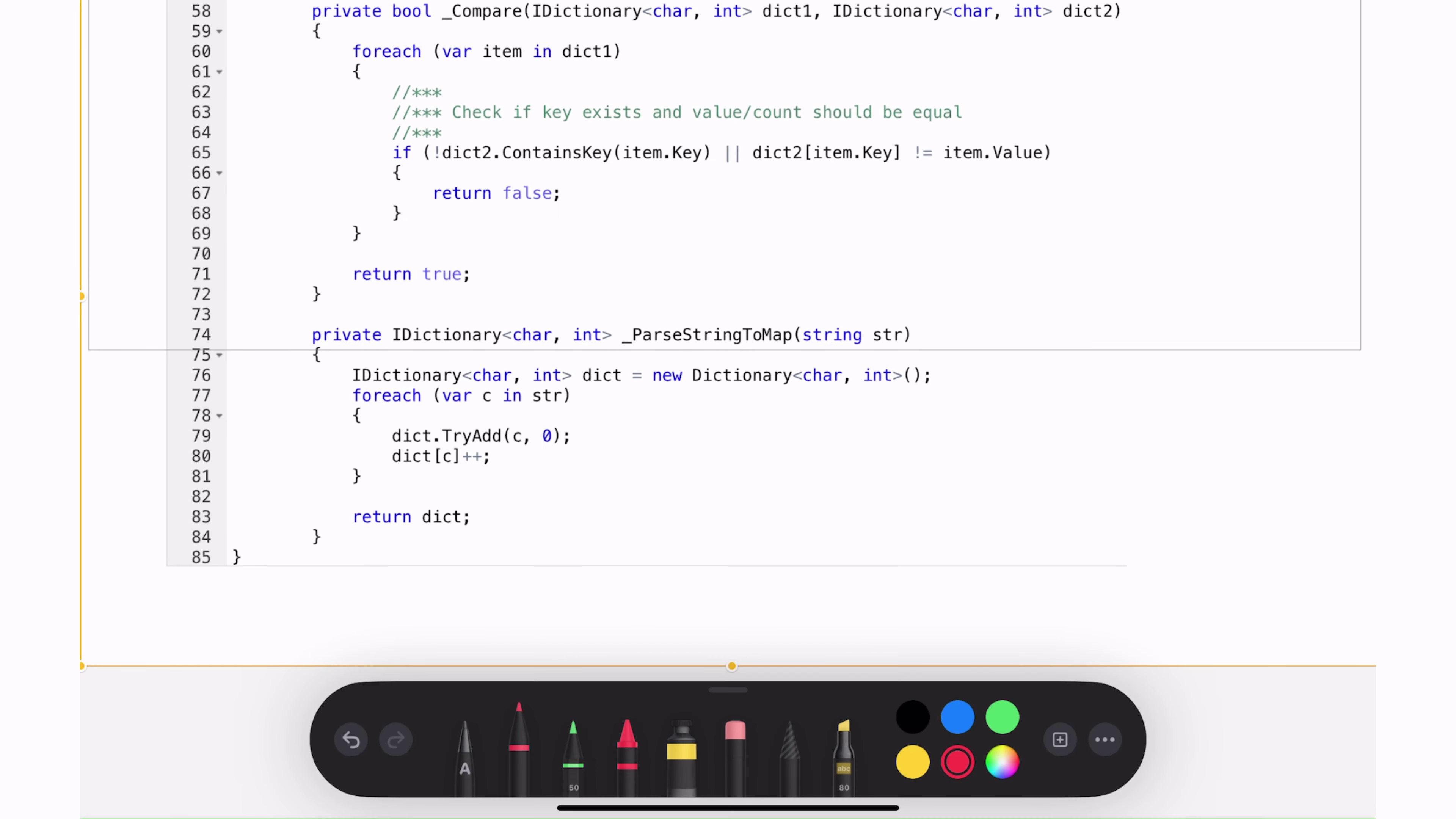One helper method that I'm using is compare which accepts two dictionaries. It will iterate through one of the dictionaries and compare if the key exists in the next dictionary and the count also matches. If either of the condition is not met, it will return false. After the for each loop is complete and all of the conditions are satisfied, I will return true.